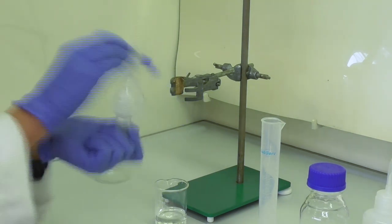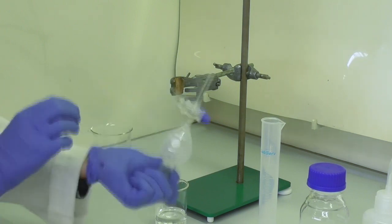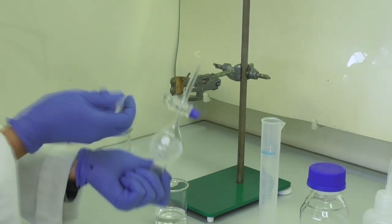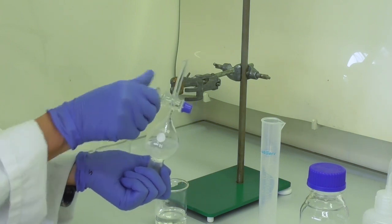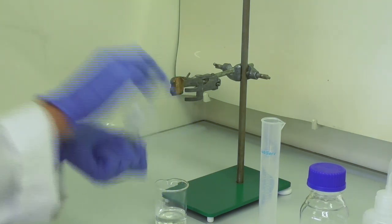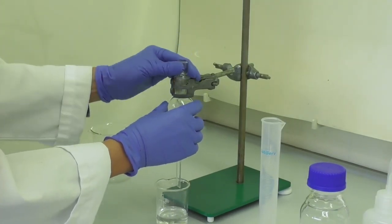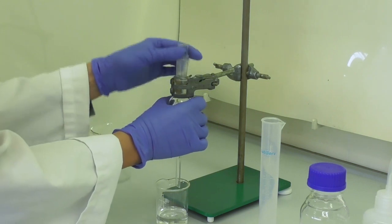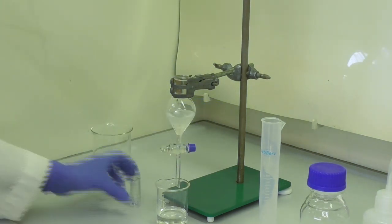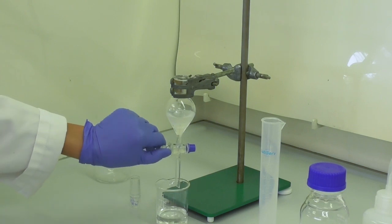Slowly we increase the shaking rate, but make sure that we release any gas being produced. Once no more gas is being produced, this process is done. We clamp the funnel again, take the stopper off, and drain the aqueous layer.